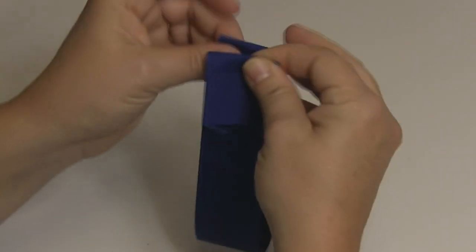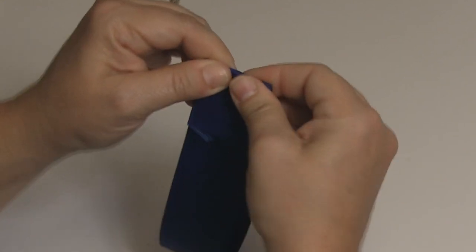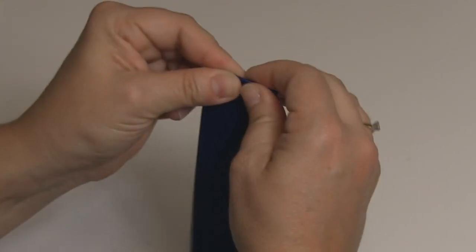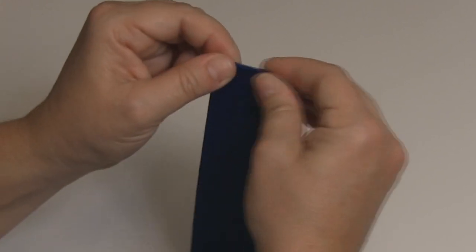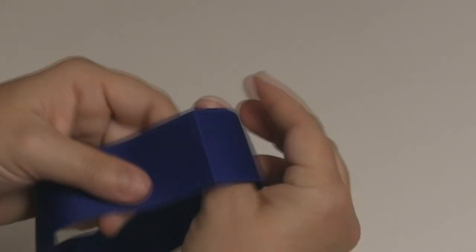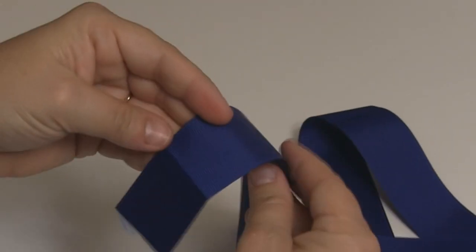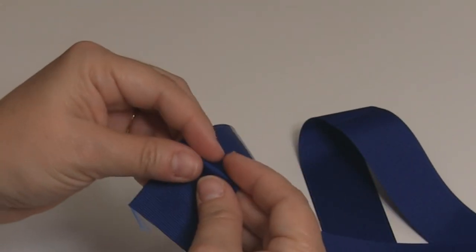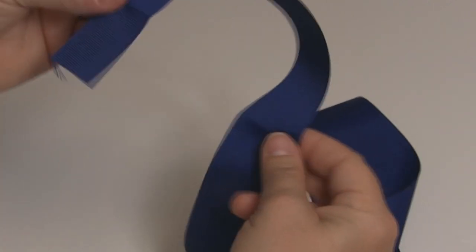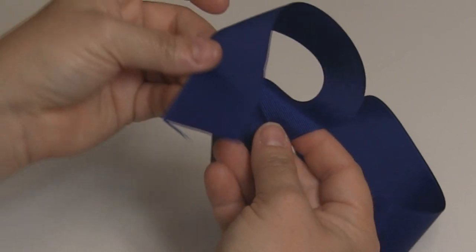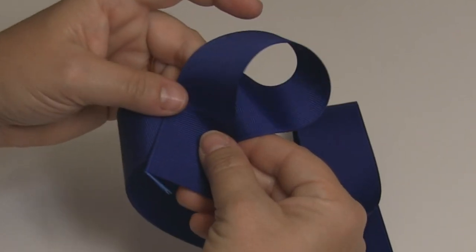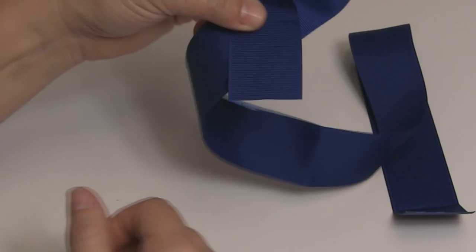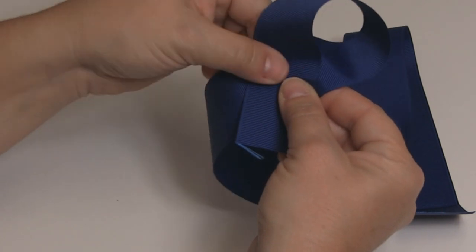Then fold the bow in half again and really squeeze on those creases because that's going to be your guide for folding the loops. So when you open it up you can see you have the creases. You're going to go to one end of your ribbon, and I'm going to take this piece that has the end and kind of with the creases I'm making like an X. And I'm going to hold it in place with my pointer finger and my thumb.